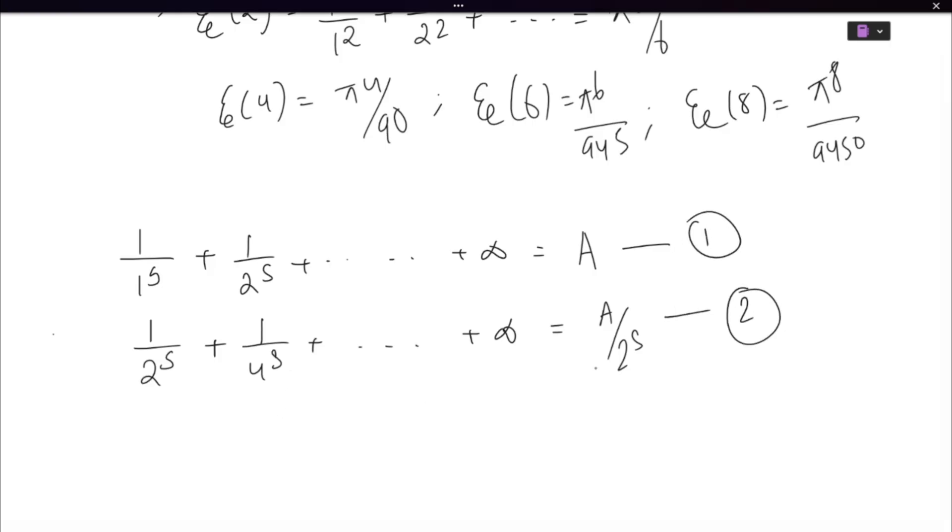So even terms will be A by 2 to the power s. That's simple, right? Because it's 2, 4, 6 and so on. And if you subtract 1 minus 2, all the even terms will cancel, so I will be left with the odd terms.